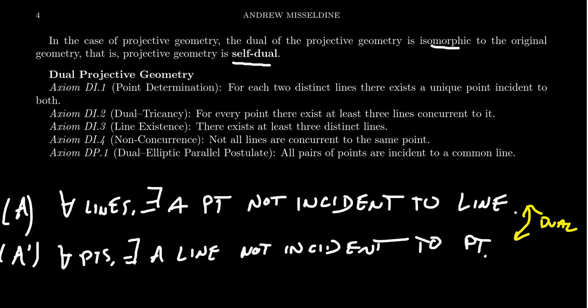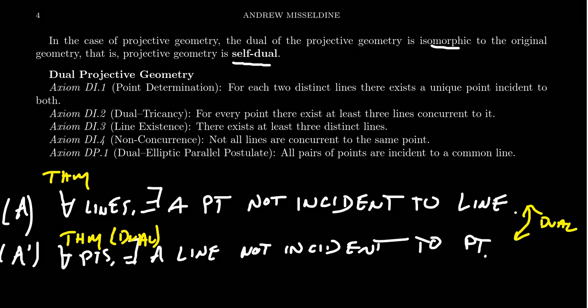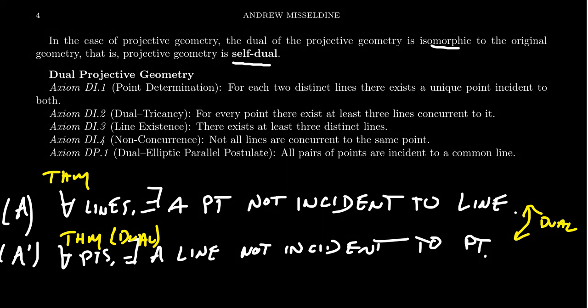These statements are dual to each other. Whenever you have a geometry with a statement — whether true or false — you can rewrite it as the dual statement, which becomes a statement for the dual geometry. If the original was a theorem, the dual statement becomes a theorem for the dual geometry with essentially the same proof — you just switch all points to lines and lines to points.